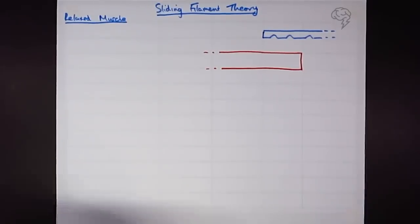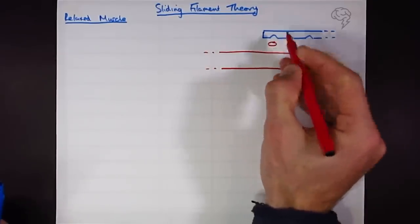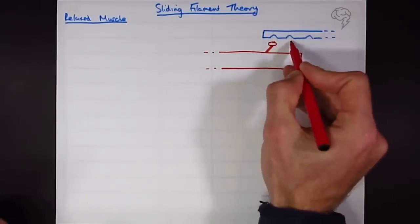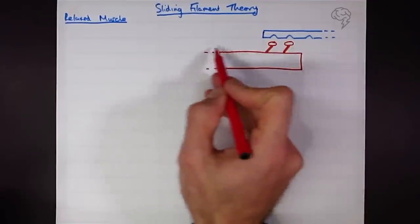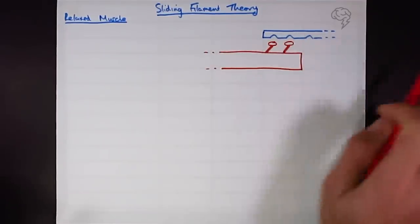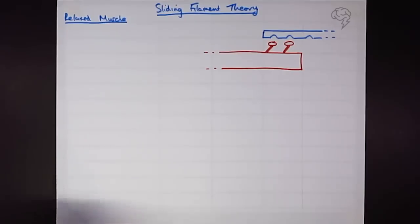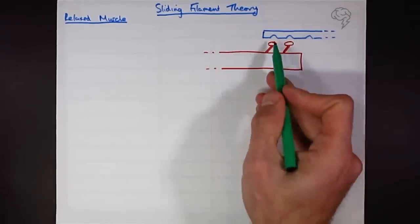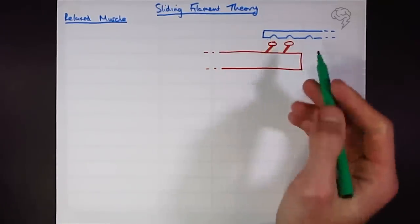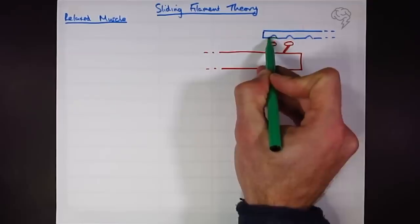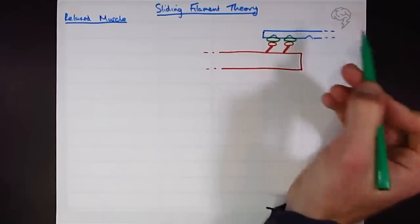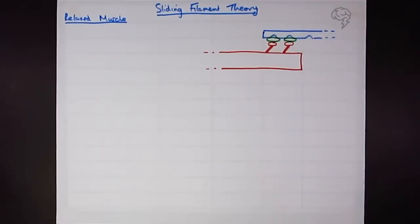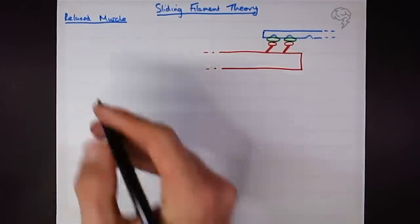On the myosin we're going to have myosin heads. I'm not going to draw them all the way along. These would repeat all the way along as with the binding sites. They'd be all the way along the length of the actin. However, the binding site and the myosin head are not connected at the moment. There's no cross bridge, which is what we call it when that happens, because there's a molecule in the way, a protein in the way, and this protein is called tropomyosin.